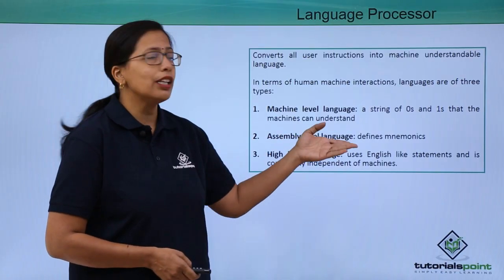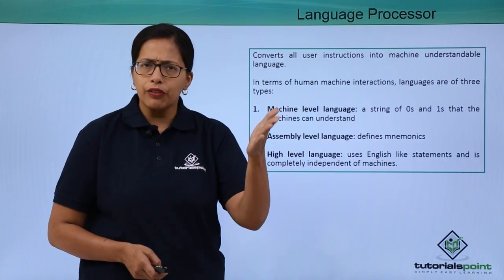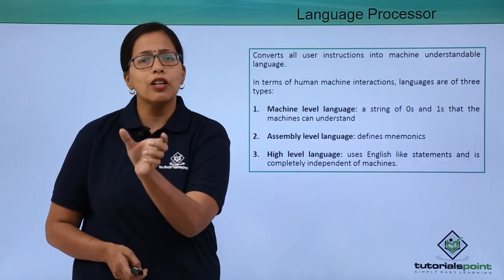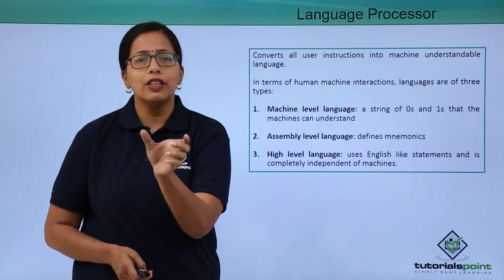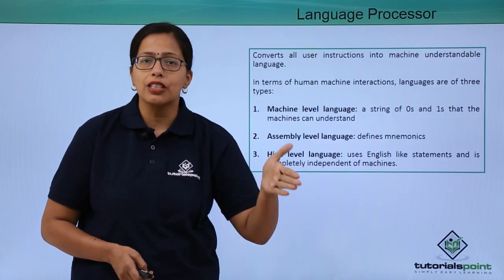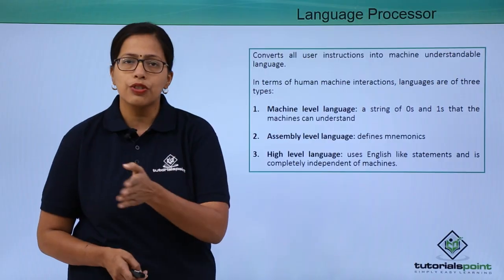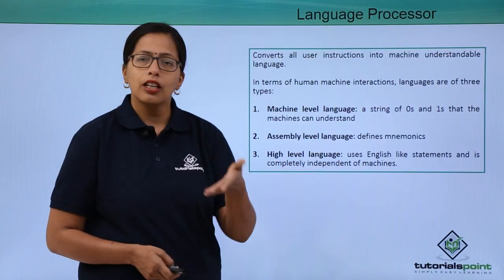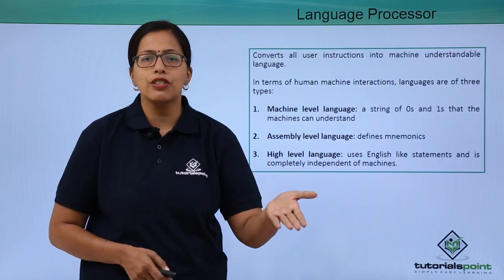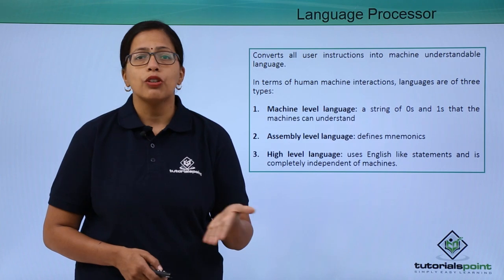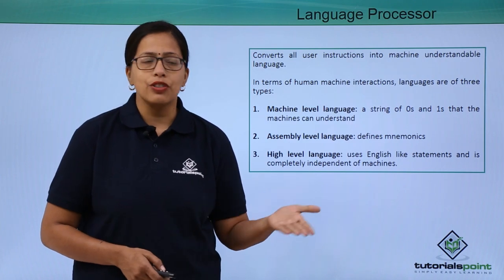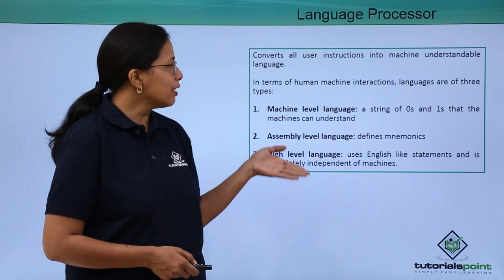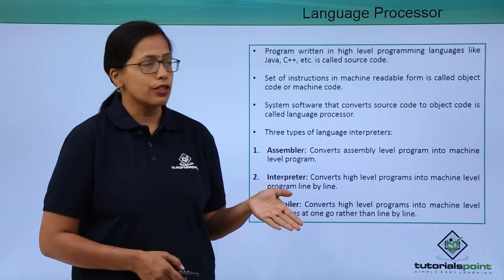Then there is assembly level language — a bit above that we have mnemonics, small words that tell the computer what to do instead of zeros and ones. And then high level languages — English-like languages that we are used to. The programming languages are written in high level languages. So these are the three types of languages.